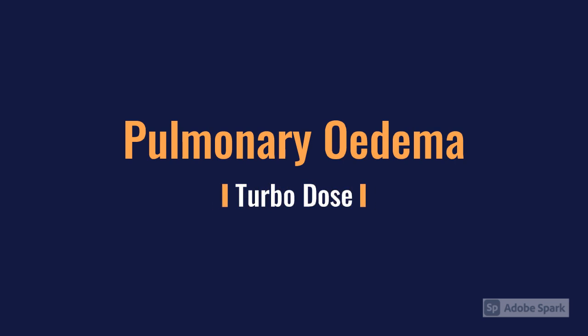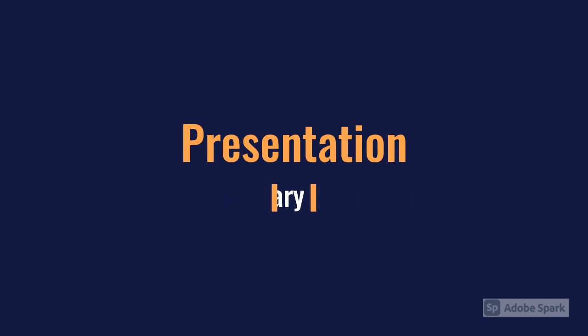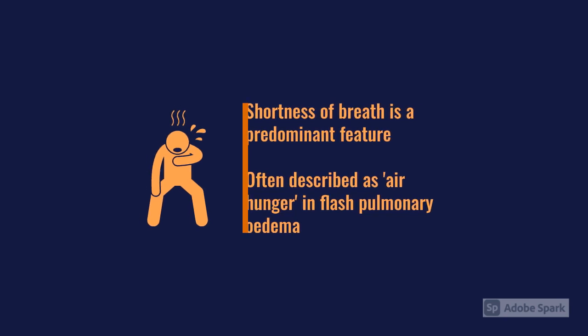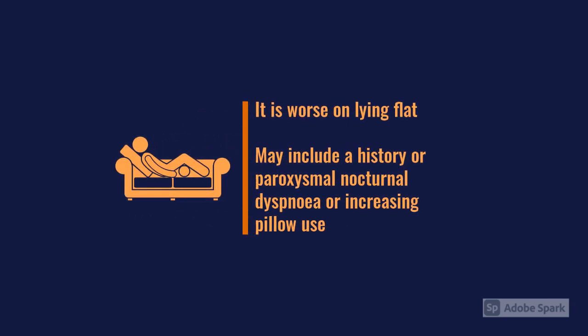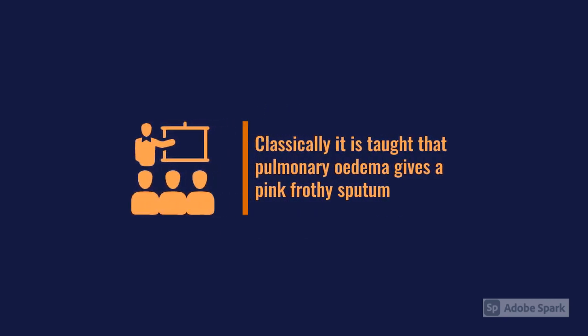In terms of presentation in an acute heart failure in the ED, unsurprisingly shortness of breath is the predominant feature — often that air hunger type expression where patients feel they can't get any air into their lungs. It's worse on lying flat, so orthopnea may be present, and you can get a history of paroxysmal nocturnal dyspnea or increased pillow use. A cough is often quoted as being productive of frothy pink sputum.